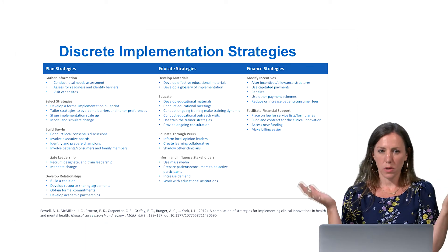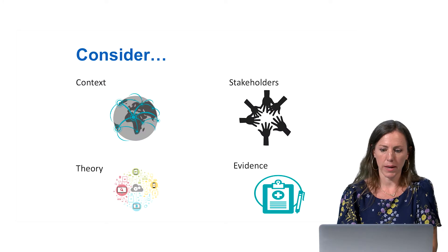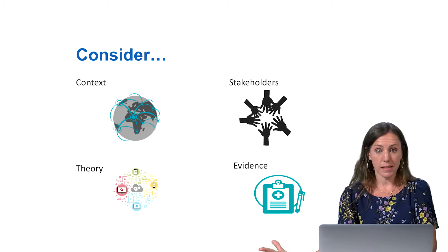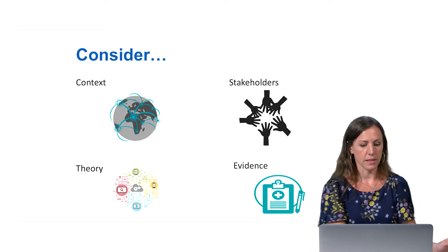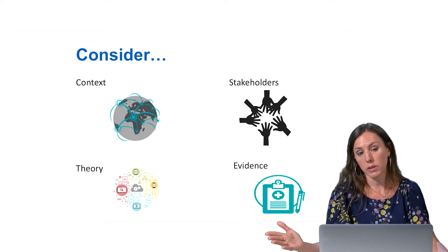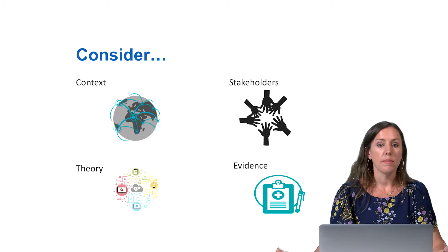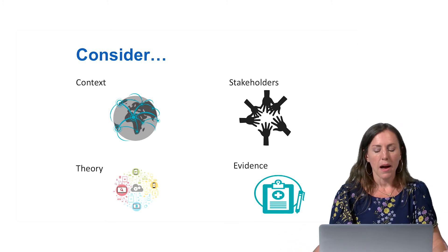The literature says this, so I have to do this — but we don't know a lot in this area, so I think it's really wide open. Always think about involving your stakeholders in selecting these, looking at existing evidence, and thinking about opportunities for bringing in theory. Maybe you could use something like the Consolidated Framework for Implementation Research — CFIR — for understanding some of the potential barriers and facilitators in your setting, and then try to match those with some of the implementation strategies.